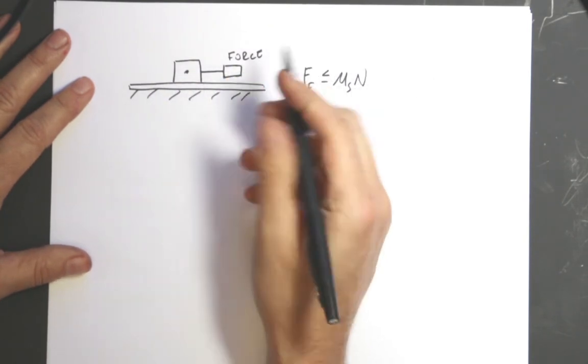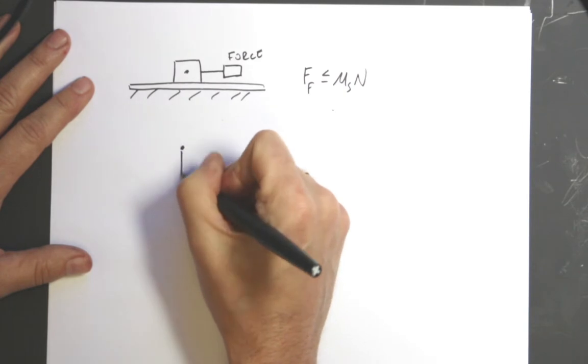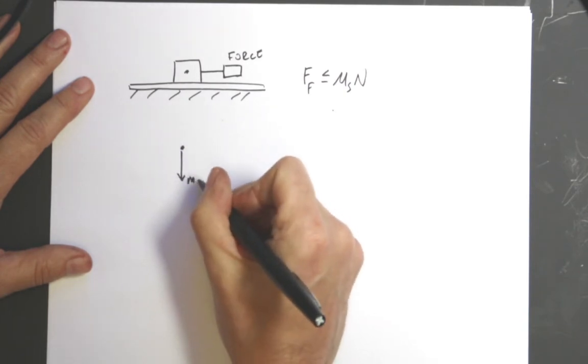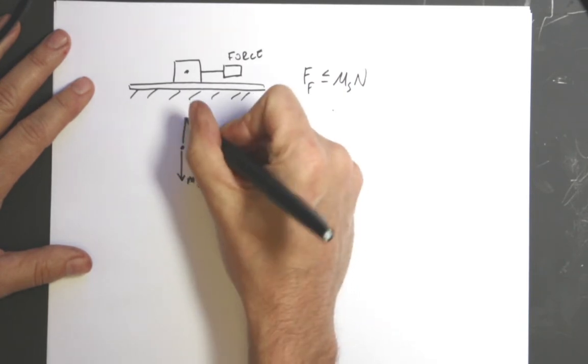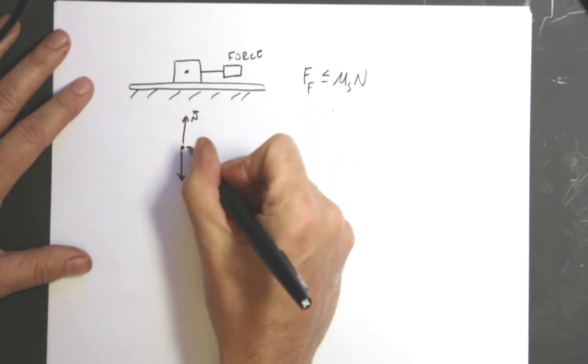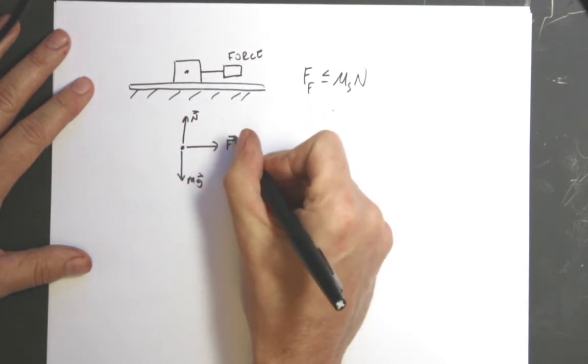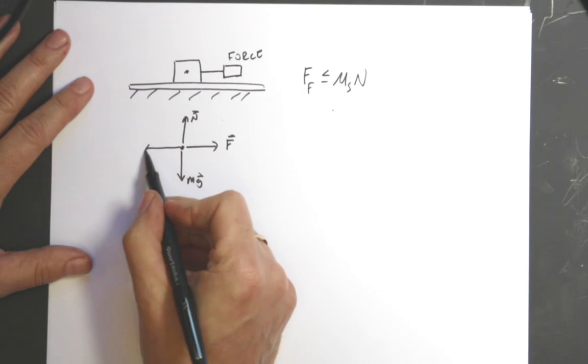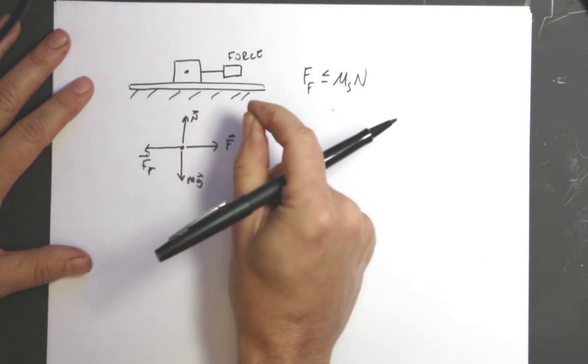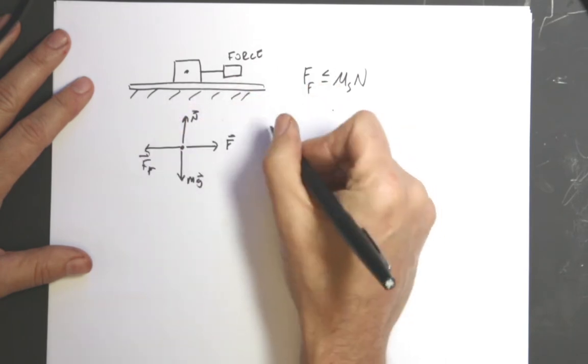In that case I have the following forces: the gravitational force pulling down, the upward normal force pulling up, I have this F, and then I have the backwards pulling frictional force. If it's right before it starts to move, then the net force is zero.